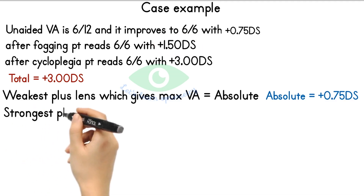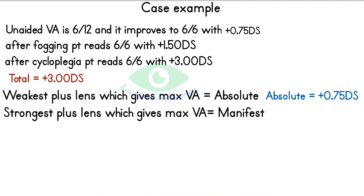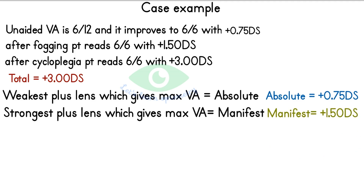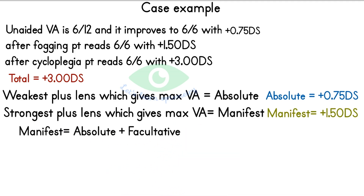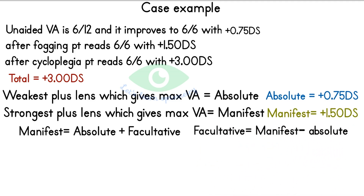After fogging, the patient reads 6/6 with +1.5 D spherical. This is the strongest plus power with which the patient can still maintain optimum clear distance vision, so manifest hypermetropia is +1.5 D spherical. Since manifest hypermetropia equals absolute plus facultative, and we have absolute as +0.75 D and manifest as +1.5 D, we subtract absolute from manifest to get the facultative value.